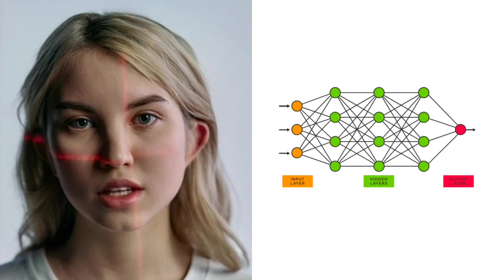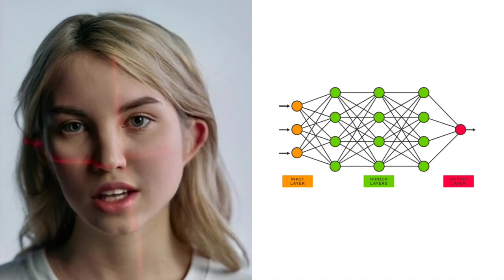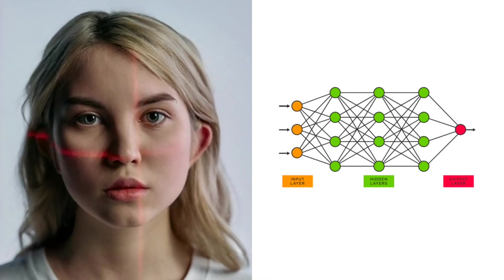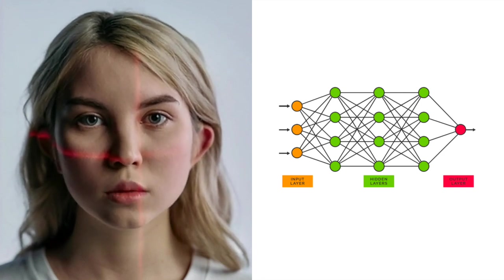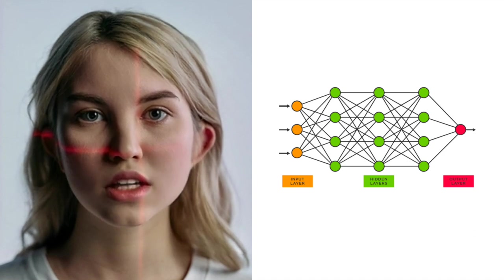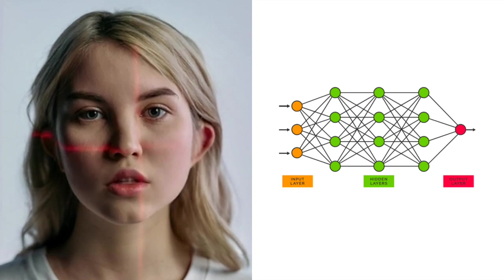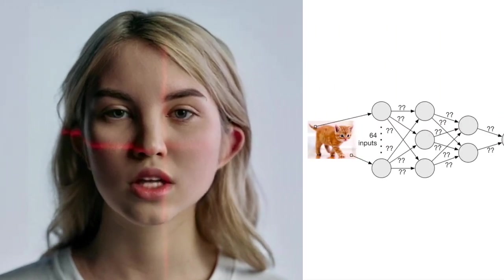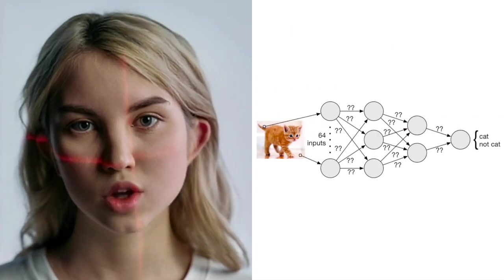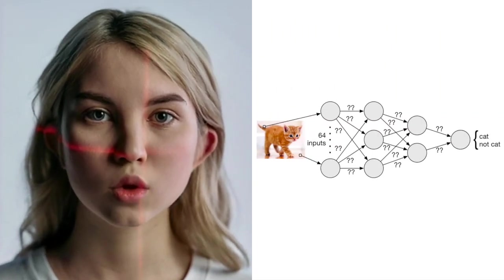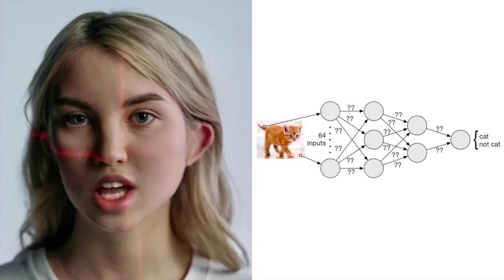Neural networks, on the other hand, consist of interconnected layers of artificial neurons. These models require a predetermined number of weights and biases, regardless of the training dataset's size. By adjusting these parameters during training, neural networks learn to approximate complex functions.